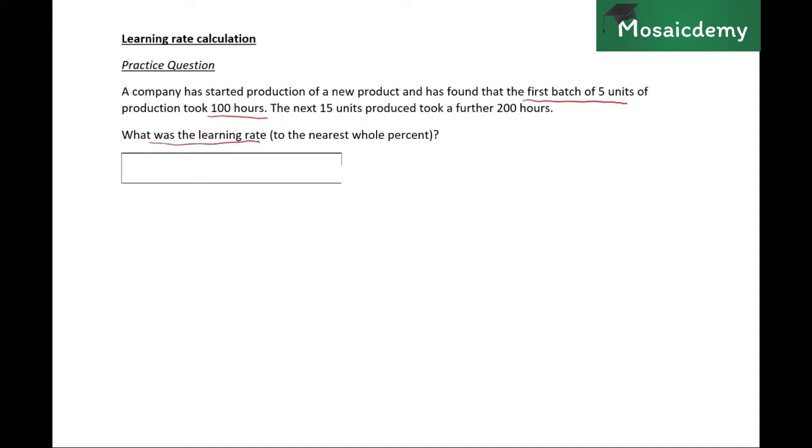The next 15 units produced took a further 200 hours, okay? So we need to calculate the learning rate. So we'll be dealing with the table. We have the number of batches, we have the average time per batch, and we have the total time per batch columns, right?